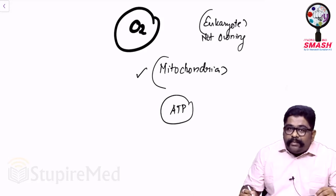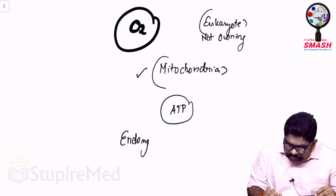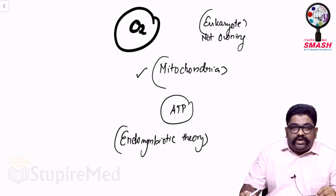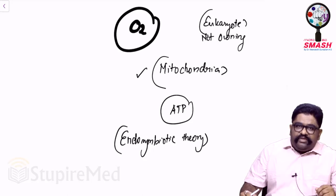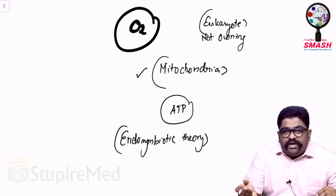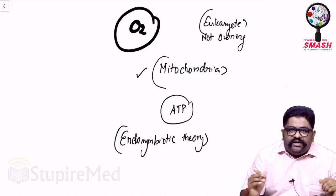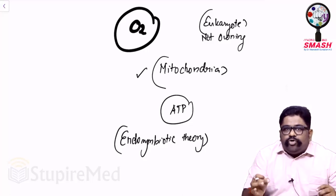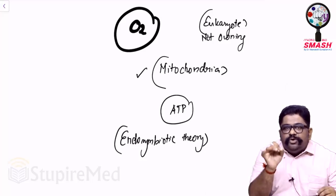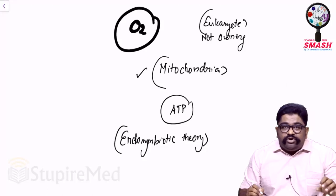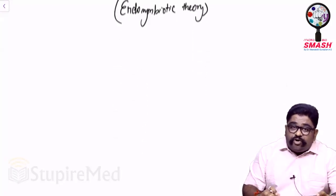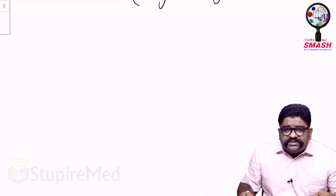We have mitochondria, but we don't own them. There is a theory called the Endosymbiotic Theory. Thousands of years back, mitochondria was not actually a mitochondria — it was one of the aerobic bacteria that got trapped inside a eukaryotic or prokaryotic cell. That trapping proved beneficial to each other; the cell benefited from the bacteria and the bacteria benefited from the cell. They had a symbiotic relationship. So even now, the mitochondria in my eukaryotic cell evolutionarily is not mine — it is another bacteria staying inside my body for thousands of years.